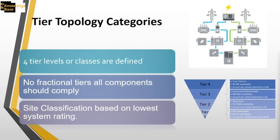Moving on to tier levels: in a data center, there are four tier levels from tier one to tier four — or class one to class four depending on whether you follow Uptime, ITU, or different standards. There are no fractional tiers. If your power is designed to tier three but your cooling is tier two, your data center will be tier two. A tier level is always based on the lowest-tier system rating in your data center.